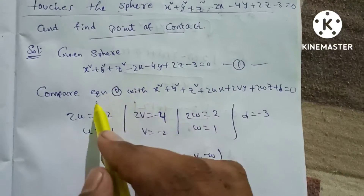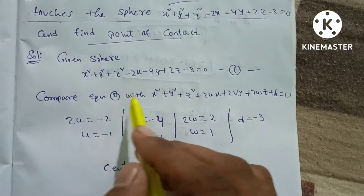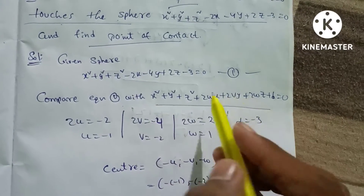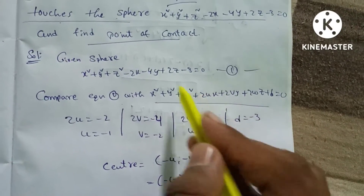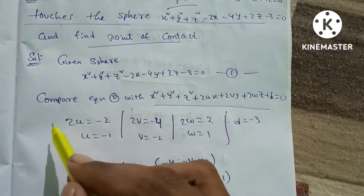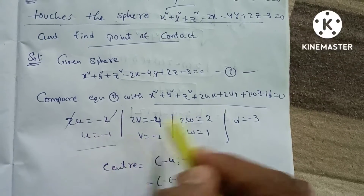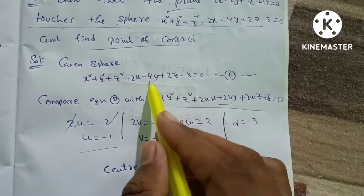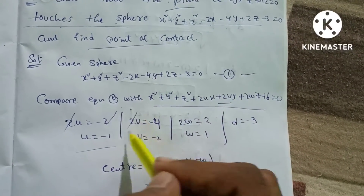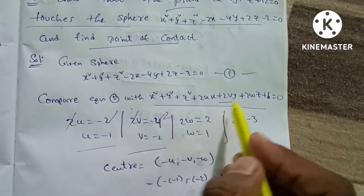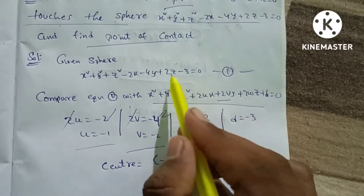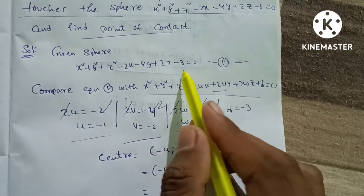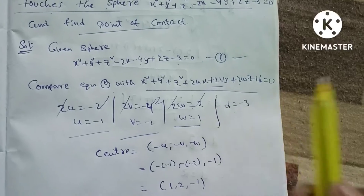This equation will be compared with the general equation of the sphere. Comparing: 2u equal to minus 2, so u equal to minus 1. 2v equal to minus 4, so v equal to minus 2. 2w equal to 2, so w equal to 1. d equal to minus 3.